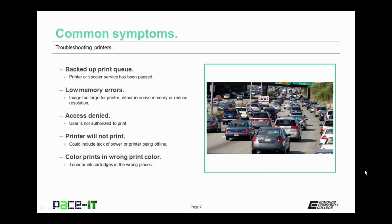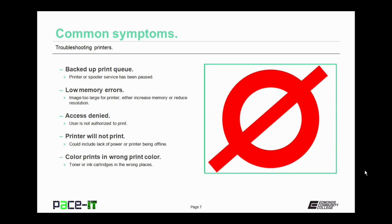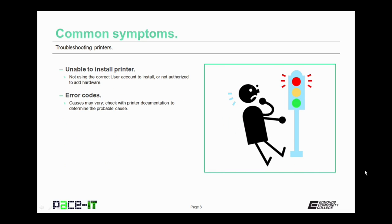You can either increase the memory in the printer or reduce the resolution of the image. An access denied error is usually caused by the user not being authorized to print. If the printer just will not print, you need to look to see if it's plugged in and turned on, and whether it's online or offline. If color print jobs come out in the wrong colors, it's usually because the toner or ink cartridges are in the wrong places inside the printer. If you're unable to install the printer, you're not using the correct user account or you're not authorized to add hardware. If you receive error codes, the causes may vary — check the printer documentation to determine the probable cause.